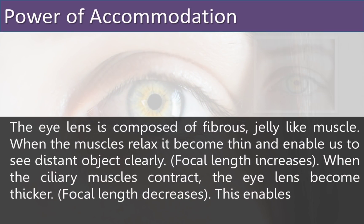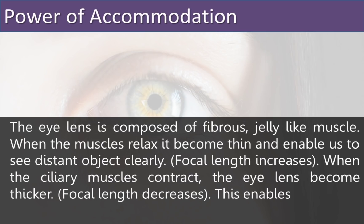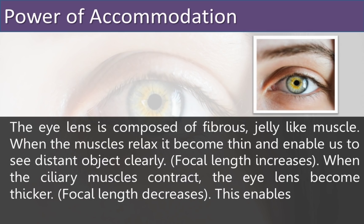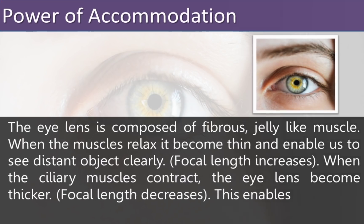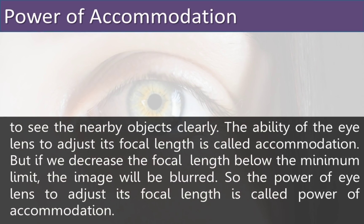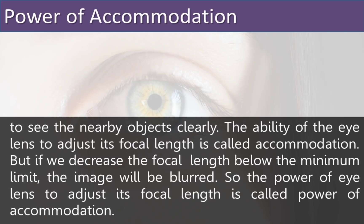The eye lens is composed of fibers and jelly-like material. When the ciliary muscles relax, the lens becomes thin and enables us to see distant objects clearly — that means the focal length increases. When the ciliary muscles contract, the lens becomes thicker, meaning the focal length decreases, so this enables us to see nearby objects clearly.